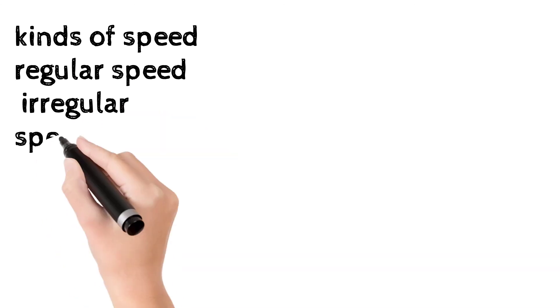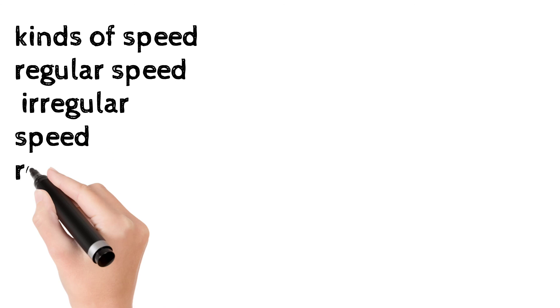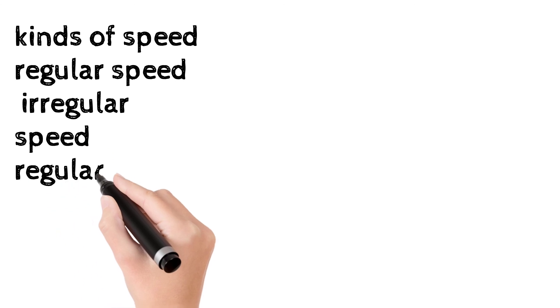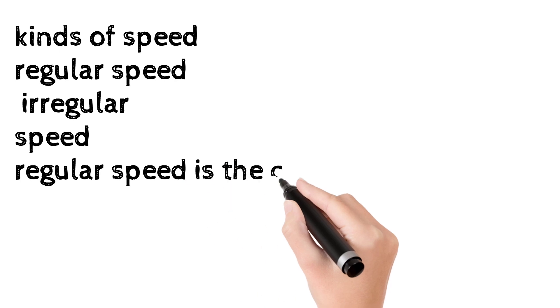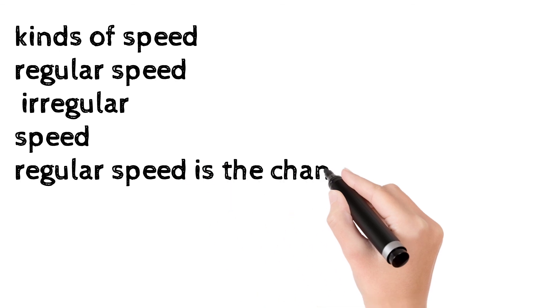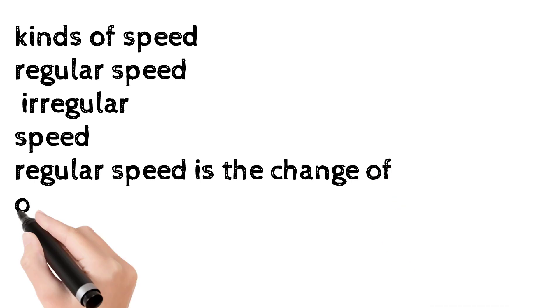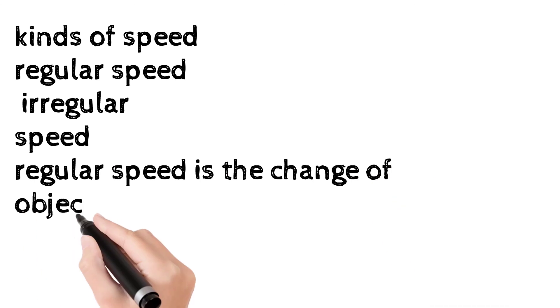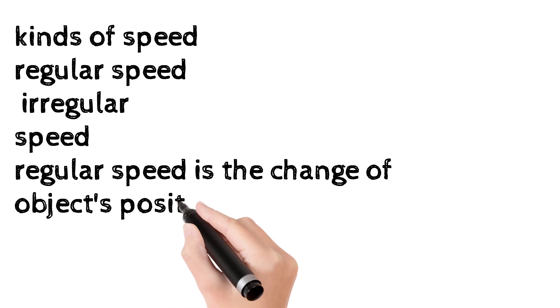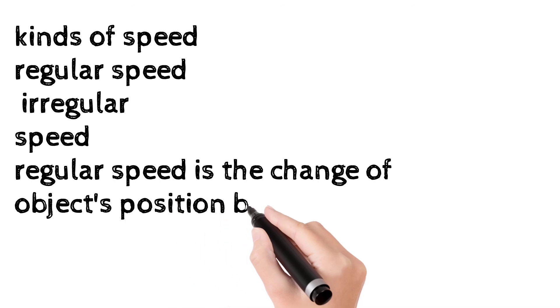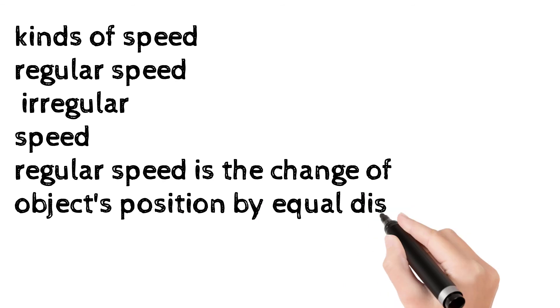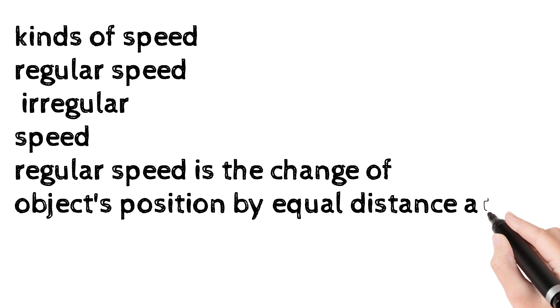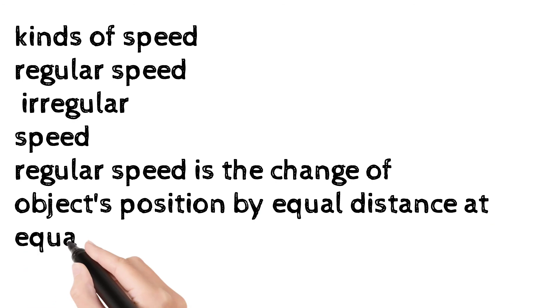There are many problems about speed. But before we speak about the problems of speed, we are speaking about kinds of speed. The first kind of speed is regular speed or uniform speed.